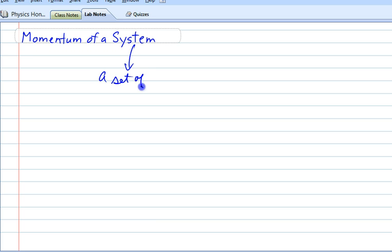So it's a set of defined objects. The importance of calculating the momentum of a system is, as we'll learn later on, the total momentum of a system does not change. That's very important to keep in mind. If you have a system of multiple objects, each has its own momentum.